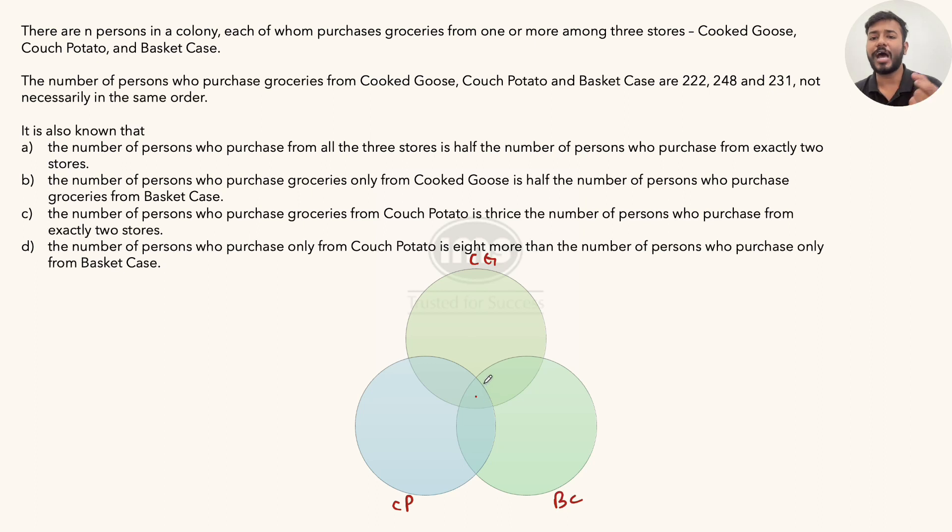There are four points. Let's read them one by one and make the maximum reduction out of them. The first point: It is also known that the number of persons who purchase from all the three stores is half the number of persons who purchase from exactly two stores. So this statement is actually done.